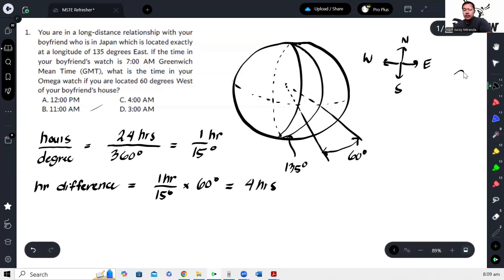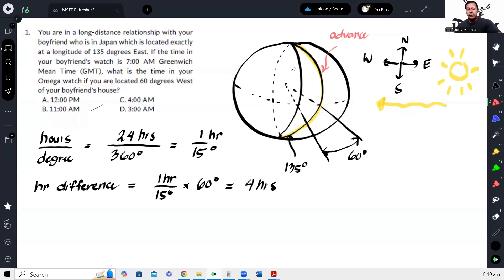Always, our day starts from the east and goes there. Okay, and as we can see, that means the time here at 135 degrees is advanced. Okay, so that means the time here should be delayed.